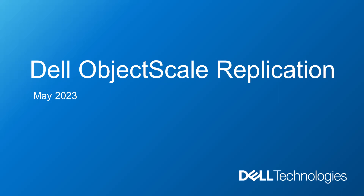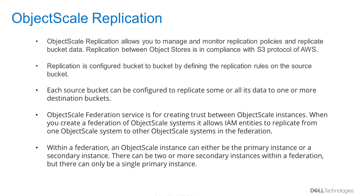Welcome to the demo of configuring replication in Dell Object Scale Storage. My name is Anuraj, and I am an engineering technologist with Dell. Dell Object Scale Storage is an enterprise object storage built to run natively on a Kubernetes cluster. In the object scale system, replication is configured bucket to bucket by defining the replication roles on the source bucket, and object scale supports replicating from one source bucket to multiple destination buckets.